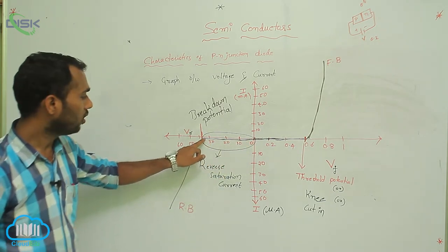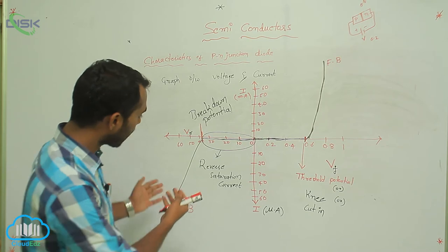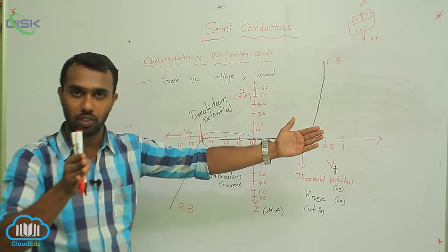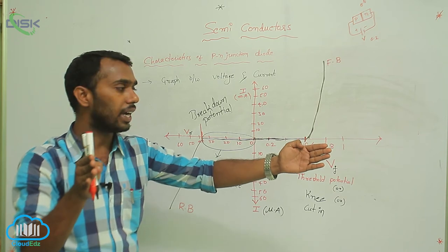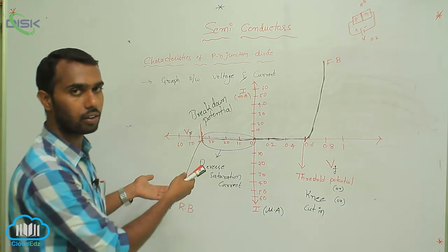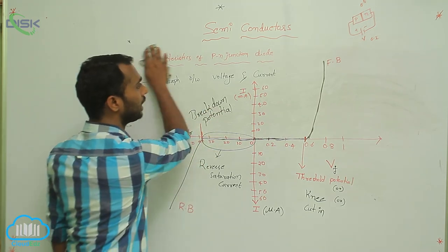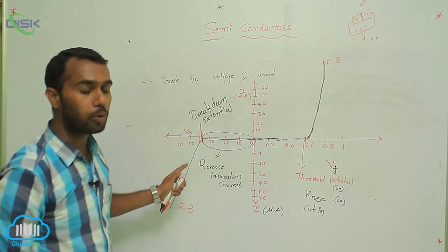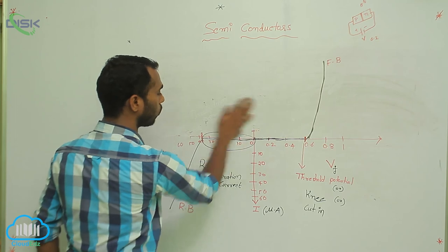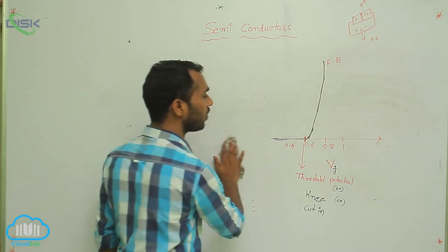This reverse saturation current increases at breakdown. In reverse bias, how does current increase? In reverse bias the depletion layer width is more, so we get less current — but here we also get more current. We have to discuss that using the breakdown potential. In reverse bias we are getting more current because of the breakdown. In reverse bias we have two types of breakdown: one is avalanche breakdown, and the next one is Zener breakdown.